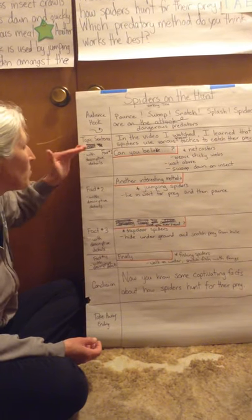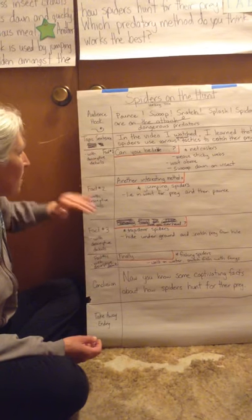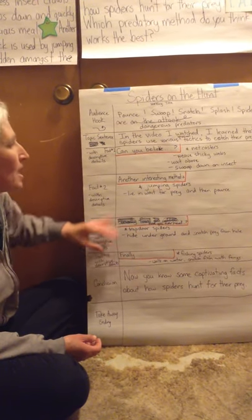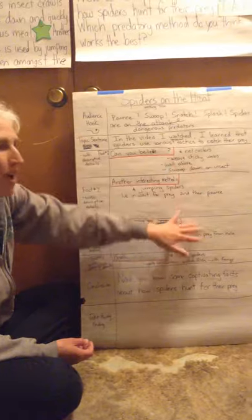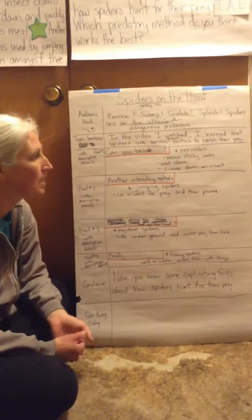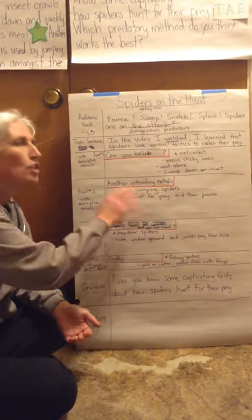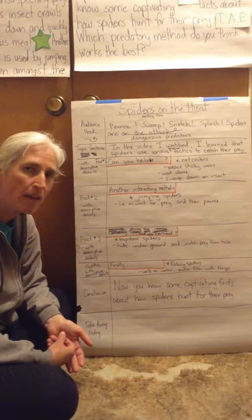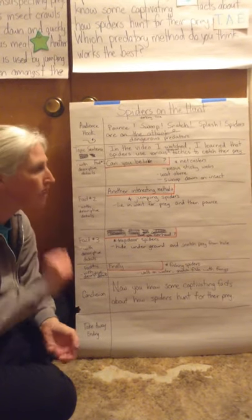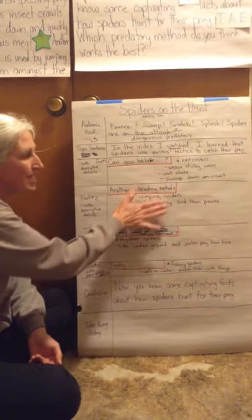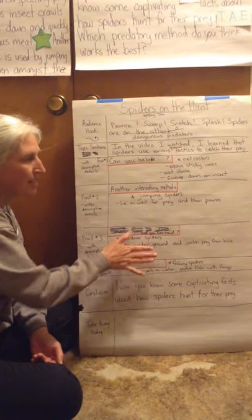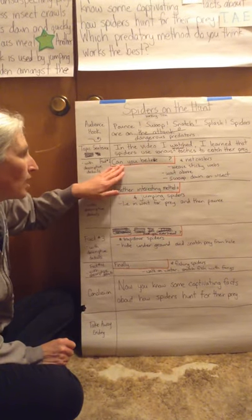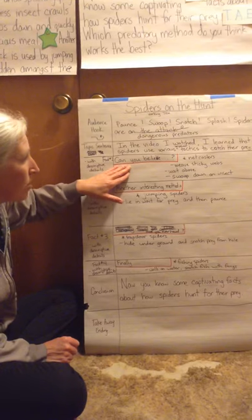For fact number one with the descriptive details — numbers two, three, and four — I'm not writing out all of these facts in full sentences. I'm writing quick notes to remind myself of what I want to talk about in my writing. Then as I fluently write, I'm going to put these ideas into complete sentences. I did pick the interesting transitions that I want to use.